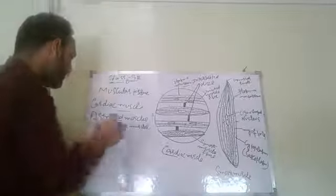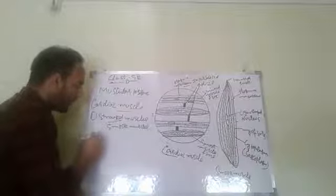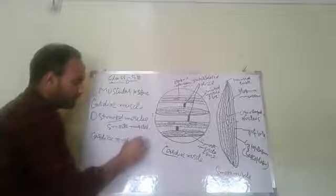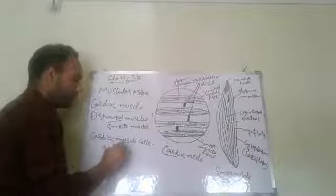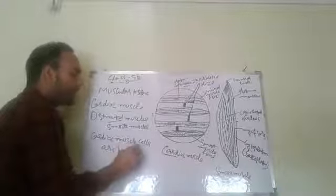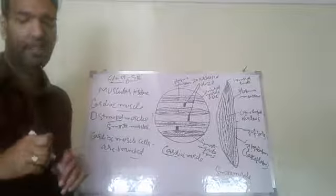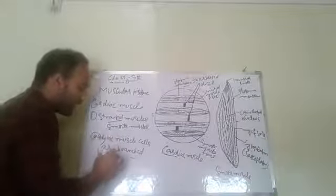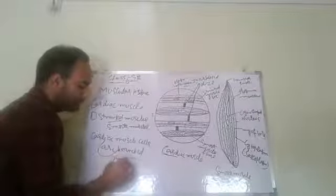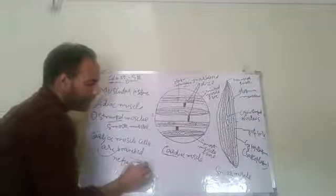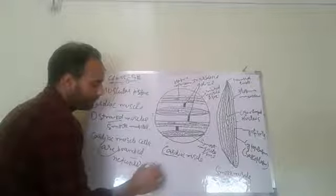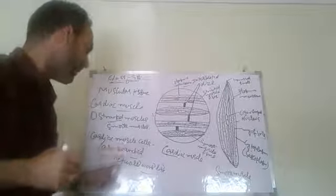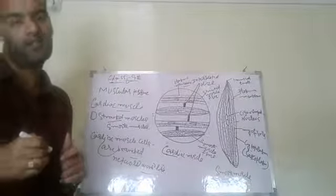The cardiac muscle cells are branched, and hence they form a network-like structure. Because these cardiac muscles are branched, they form a network-like structure. Due to the presence of branched structure in cardiac muscle, this type of muscle forms a network-like structure.